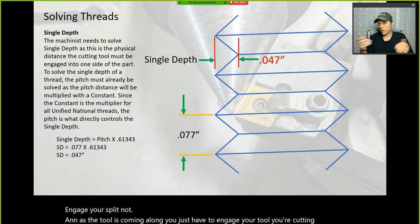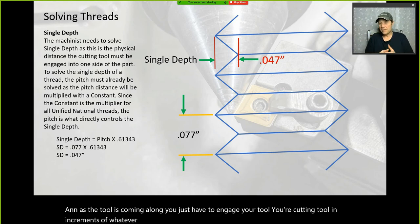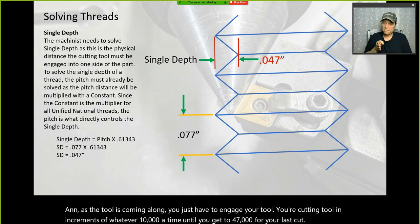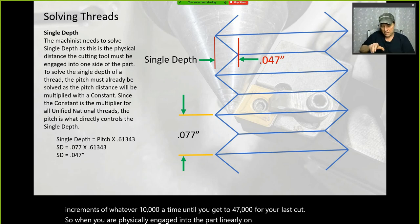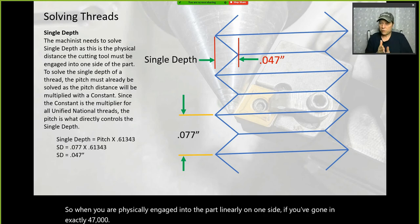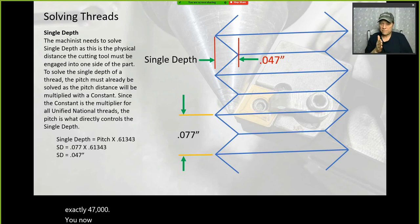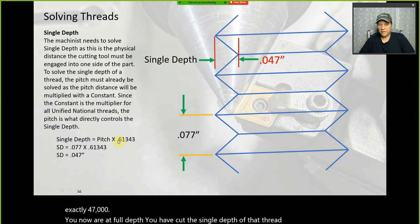As the tool comes along, you engage your cutting tool in increments — maybe 10 thou at a time — until you get to 47 thou. When you are physically engaged into the part 47 thou linearly on one side, you are at full depth. You have cut the single depth of that thread at 75 percent, which is what you're after.